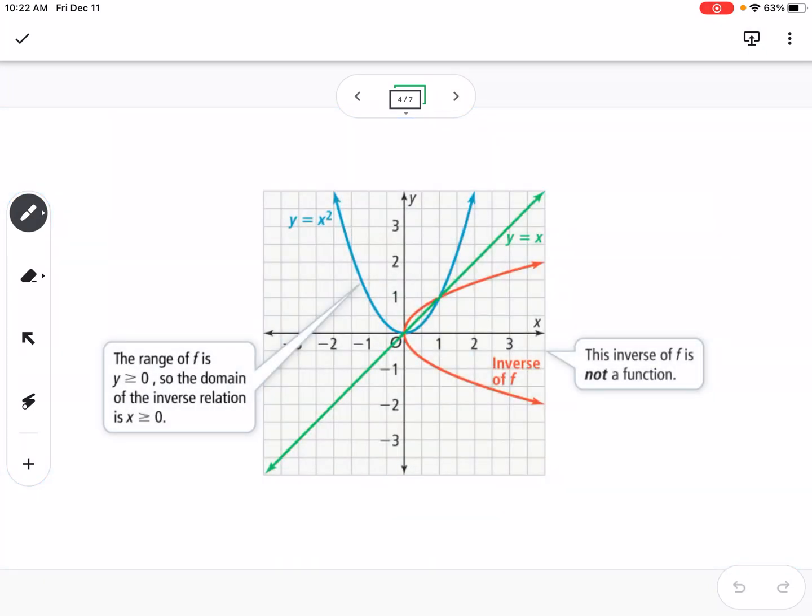So graphs of inverses are reflected over the y equals x line. So you're always going to see reflection if you graph them. So you can see the blue graph shows us y equals x squared, and we can see the domain and range, and then we can see the inverse of f is the orange or the red graph that's kind of the parabola on its side. So if we think about the domain of our blue graph would be all real numbers, negative infinity to positive infinity, and the range it states here is from 0 to infinity.